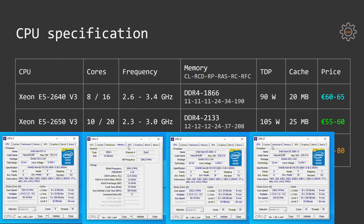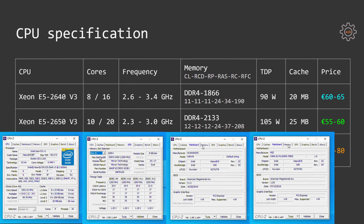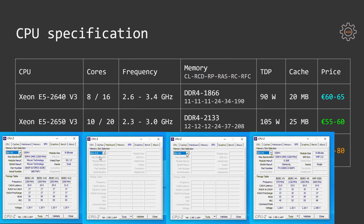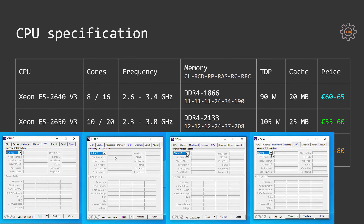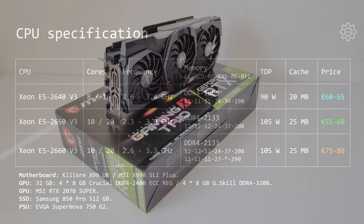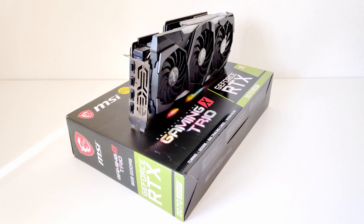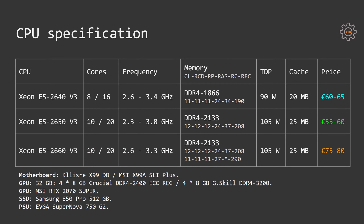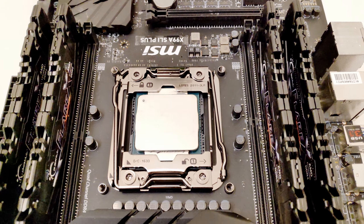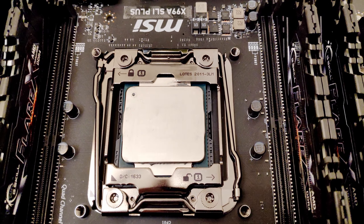All CPUs were tested with Turbo Boost Unlock on a Chinese Klycerer X99-D8 motherboard, using 32 gigabytes of Crucial DDR4 2400 ECC registered memory in a 4-stick configuration, giving quad channel with 8 gigabytes per channel. For the GPU I used an MSI RTX 2070 Super, Samsung 850 Pro 512GB as the system drive, and an EVGA Supernova 750 G2 as the power supply. I also tested the 2660v3 on a branded MSI X99A SLI Plus motherboard with a slight overclock using BCLK and the memory controller.